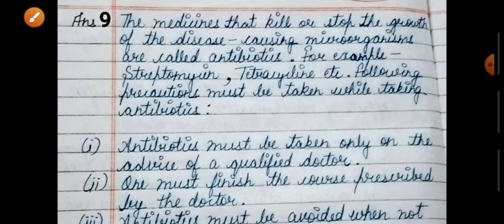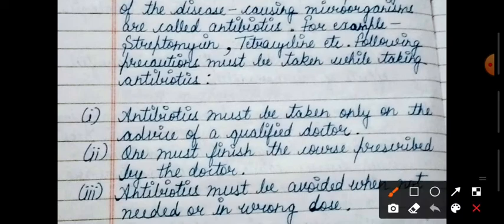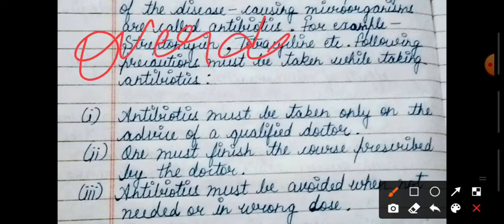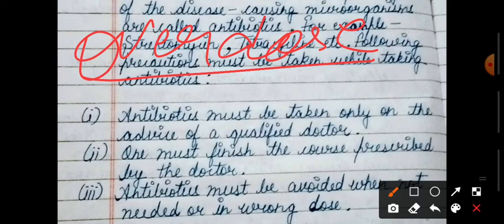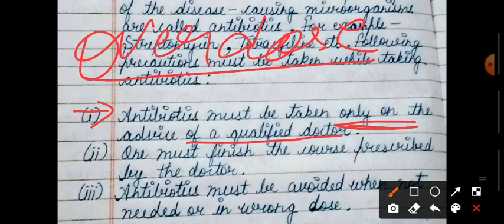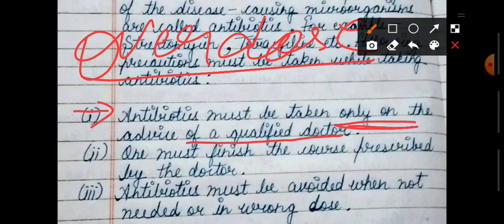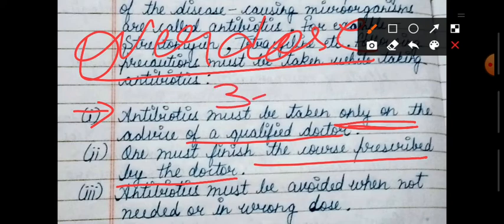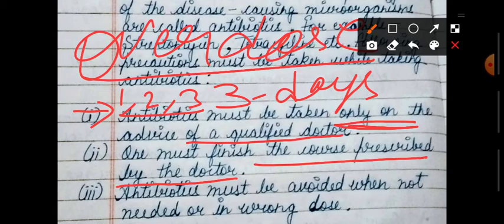What precautions must be taken while taking antibiotics? If not careful, they can be harmful. Antibiotics must be taken only on the advice of a qualified doctor. One must finish the course prescribed by the doctor. If the doctor says you have to take it for three days, you have to take it for three days. Antibiotics must be avoided when not needed or in wrong dose.